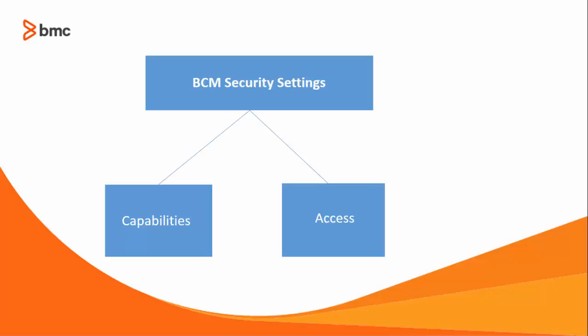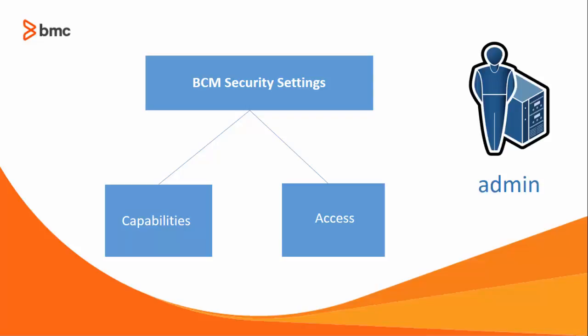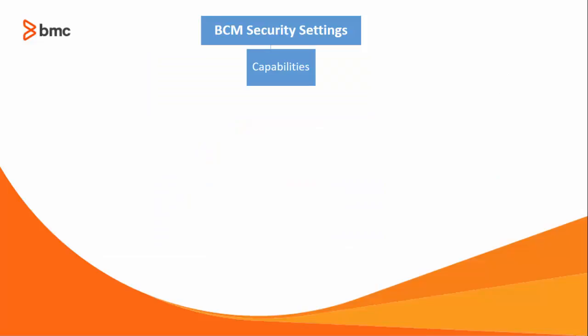Each admin or administrator group is assigned a security profile. The security profile is a set of configurations that decide the operations an administrator can perform on certain devices. A security profile has two major components: capabilities rights and access rights. The capabilities rights allows or denies administrators to access different nodes and their functionalities in the console. Depending on the capability type, you can allow or deny the following different rights.